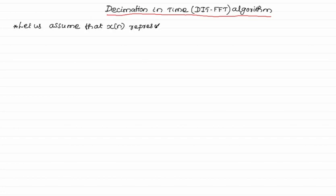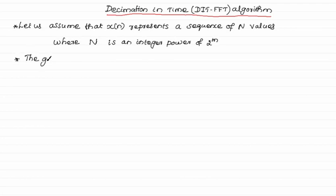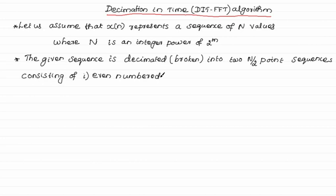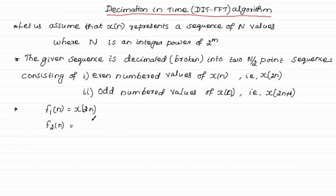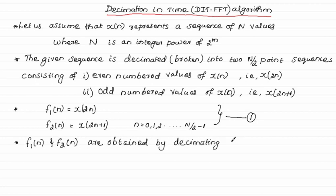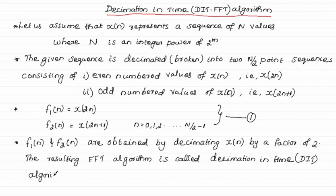Let us assume that the input x[n] represents a sequence of N values, where N is an integer power of 2. The given sequence x[n] is decimated — broken into two N/2-point sequences consisting of the even numbered values x[2n] and the odd numbered values x[2n+1]. We represent x[2n] as f1[n] and x[2n+1] as f2[n], where n = 0 to N/2. Thus f1[n] and f2[n] are obtained by decimating x[n] by a factor of 2, and the resulting FFT algorithm is called the decimation in time algorithm.